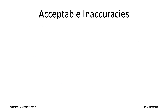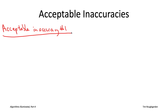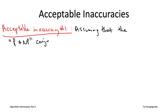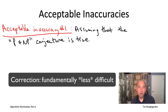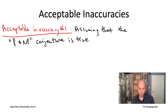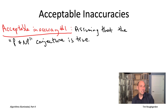That wraps up the five rookie mistakes. Let me conclude with three acceptable inaccuracies — statements that mathematically aren't quite correct, but everyone will know what you mean and it won't shake confidence that you're a master of NP-hardness. The first acceptable inaccuracy is to assume the P not equal to NP conjecture is true — that it's fundamentally more difficult to solve problems than to verify solutions. We don't actually know if it's true, but our intuition is strong, and most computer scientists treat P≠NP as a law of nature and proceed as if it's true.